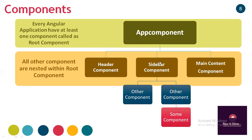Every Angular application has at least one component, called the root component, or conventionally the app component. Within the app component there is one template and one class. Every component box — header component, sidebar, main component — contains two parts: a template (HTML) and a class (TypeScript). Within the app component, other components are nested — header component, sidebar component, main component, footer component — and within these, further components can be nested. Using all these components together, we render the view of the application in a browser.